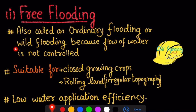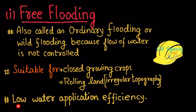This field flooding is also called ordinary flooding. This irrigation technique is suitable for close-growing crops, rolling land, and crops that require a large quantity of water. Because there is no provision to ensure uniform distribution and no control over the quantity absorbed by the crop, the water application efficiency is very low in this method.